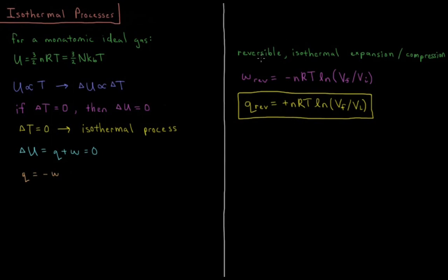For a reversible isothermal expansion or compression of an ideal gas, we showed in the previous video that the work done during that process is equal to negative nRT times the natural log of V_final over V_initial — where n is number of moles, R is the gas constant, T is temperature, and V_final and V_initial are the final and initial volumes of the system. So whatever work we do is equal to negative nRT ln(V_final / V_initial), and the heat must be equal and opposite to the work.